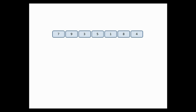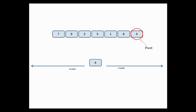The first step is to choose a pivot element. Suppose we are taking the last element of the array as pivot, so 4 is our pivot. The basic idea is to bring all elements smaller than the pivot to its left and all elements greater than the pivot to its right.